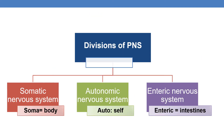Coming to the divisions of the Peripheral Nervous System, it is broadly divided into three types: somatic nervous system, autonomic nervous system, and enteric nervous system. In some cases, the enteric nervous system is considered a part of the autonomic nervous system. 'Soma' means body; 'auto' means self, so the autonomic nervous system is mostly involuntary. Enteric means intestine, so the enteric nervous system governs the digestive system.